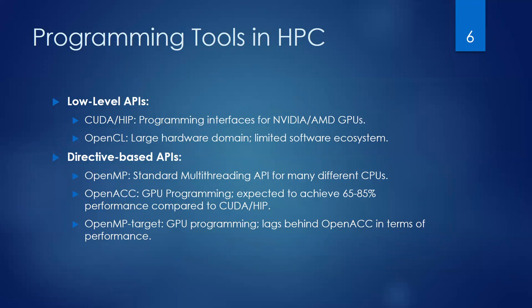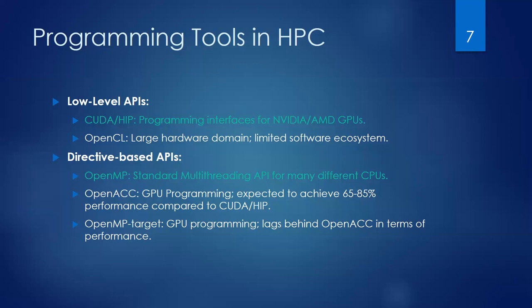We also have directive-based APIs. You may have heard of OpenMP, which is a standard multi-threading API for many different CPUs. There is also OpenACC for GPU programming, which is usually less performant compared to CUDA or HIP. And there is the newly introduced OpenMP target, an extension of OpenMP to target GPUs, though it lags behind OpenACC in terms of performance.